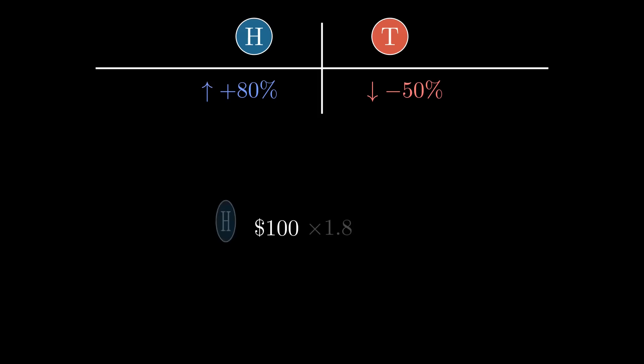For example, you flip heads, so your $100 is multiplied by 1.8. Heads again, so your $180 is multiplied by 1.8. Then tails, so your $324 is multiplied by 0.5. And so on.